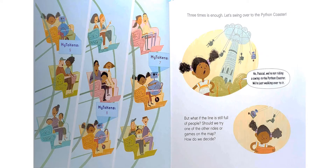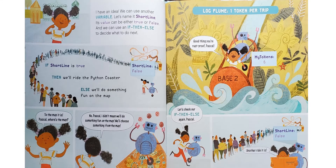Three times is enough. Let's swing over to the Python Coaster. But what if the line is still full of people? Should we try one of the other rides or games on the map? How do we decide? I have an idea — we can use another variable. Let's name it ShortLine. Its value can be either true or false. And we can use an if-then-else to decide what to do next.